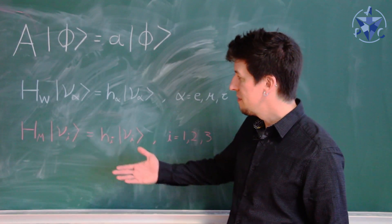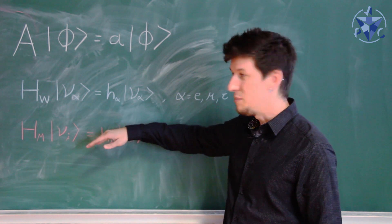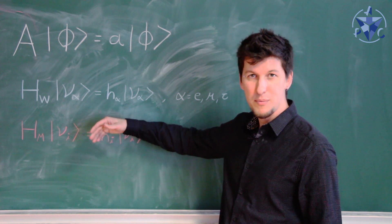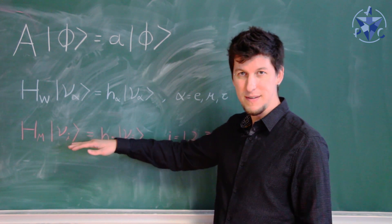So this mismatch between the interaction states and the mass states means that when neutrinos are produced in the weak interactions, they can actually be superpositions of different mass eigenstates.